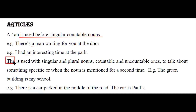'The' is used with singular and plural nouns — both countable and uncountable — to talk about something specific or when the noun is mentioned for a second time. For example: 'The green building is my school' — here I'm talking about a specific building. Or: 'There is a car parked in the middle of the road. The car is blue.'